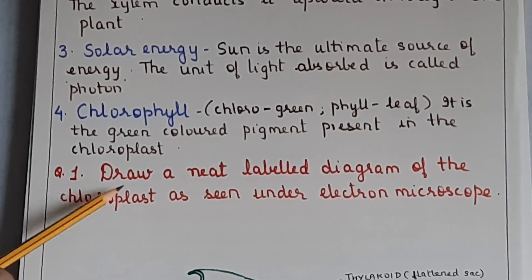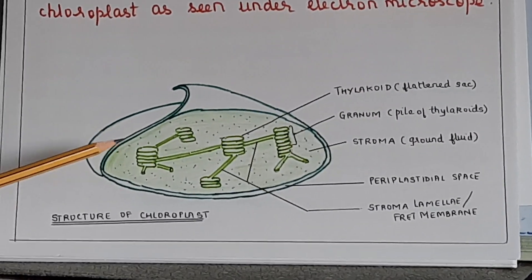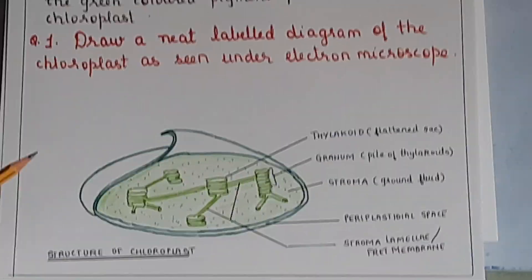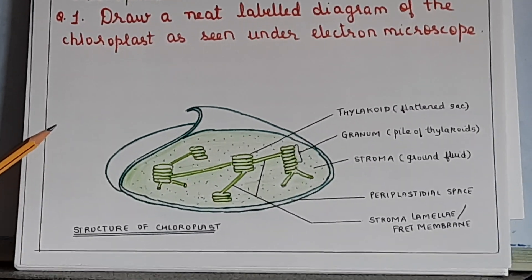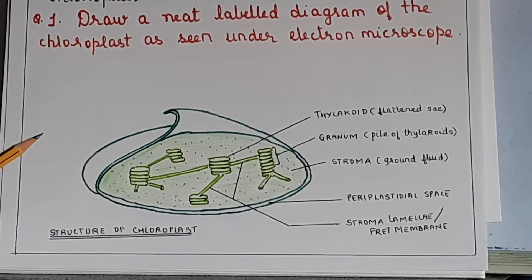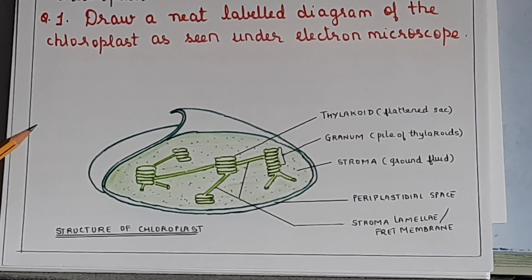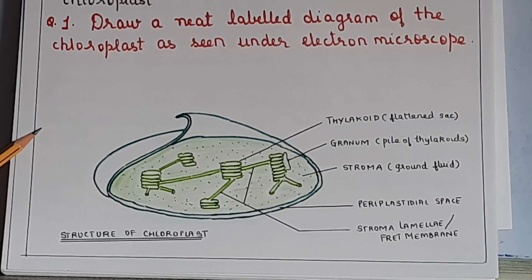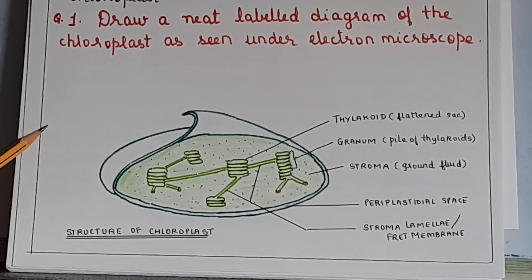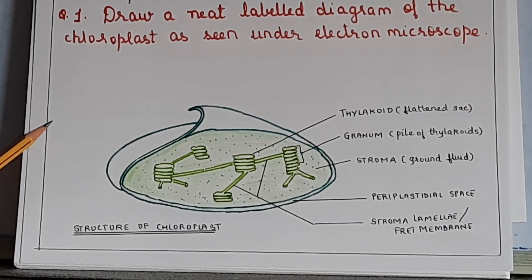Now let us look at the diagram of the chloroplast as seen under electron microscope — this is an important diagram, give it five stars. Chloroplasts are generally found in the palisade and spongy mesophyll of the leaf, and also in the guard cells surrounding the stoma. On average, a cell may have around 50 to 60 chloroplasts, and there can be as many as 5 lakh chloroplasts per square millimetre of leaf surface.